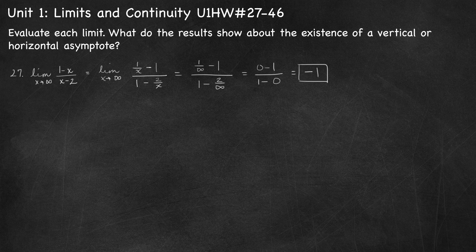Now let's talk about the shortcut. When you have a rational expression and you're taking the limit as x approaches infinity or negative infinity, you can look at the degree of the leading terms. In the numerator, the leading term is negative x; in the denominator, the leading term is x. They both have the same degree. When they have the same degree, it's the coefficients of those leading terms that determine the limit. The ratio of the leading coefficients is negative 1 over 1, which is negative 1.